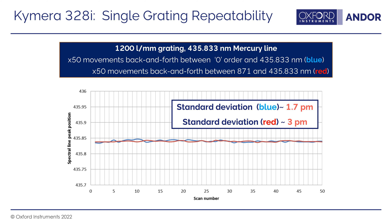Here's data showing the repeatability of a single grating on the Chimera 328 — a 1200 lines-per-millimeter grating looking at the 435 nm mercury line. The blue trace shows 50 movements back and forth between the zeroth and first order diffraction; the red trace shows 50 movements between second and first order. The standard deviation is quite good — about two picometers for the blue trace and about three picometers for the red trace.